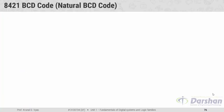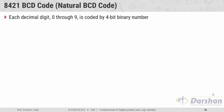BCD stands for Binary Coded Decimal. Each decimal digit 0 to 9 is coded by a 4-bit binary number. We are coding decimal digits into binary numbers. If you remember hexadecimal to binary conversions, in that we converted 0 to 9 and A to F to 4-bit binary numbers. With reference to that you can remember BCD code, but in BCD we are converting only 0 to 9 decimal digits to binary form. 8, 4, 2, and 1 are the weights attached to each bit.